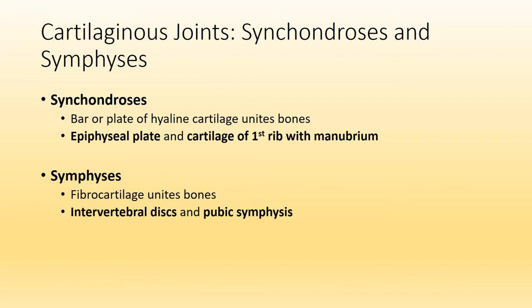The best example of a synchondrosis will be the epiphyseal plate, or the growth plate, found in long bones. A synchondrosis includes a plate of hyaline cartilage that is binding bones together. In this case, the epiphyseal plate binds the epiphysis to the diaphysis of a long bone. Another example would be the cartilage of the first rib as it unites with the manubrium, or the superior portion of the sternum.